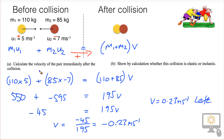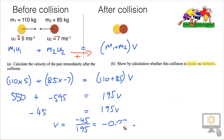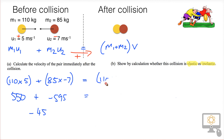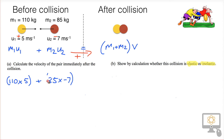Now we need to think about whether the collision is elastic or inelastic. Let's clear some space. An elastic collision is one where kinetic energy is conserved. An inelastic collision is one where kinetic energy is not conserved — some energy is lost as heat. More often than not, in large-scale collisions like this, some kinetic energy is indeed lost.